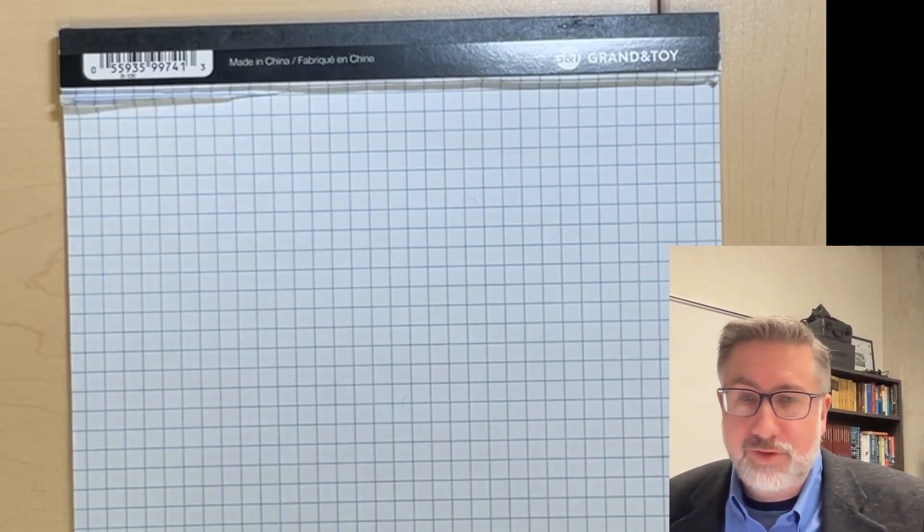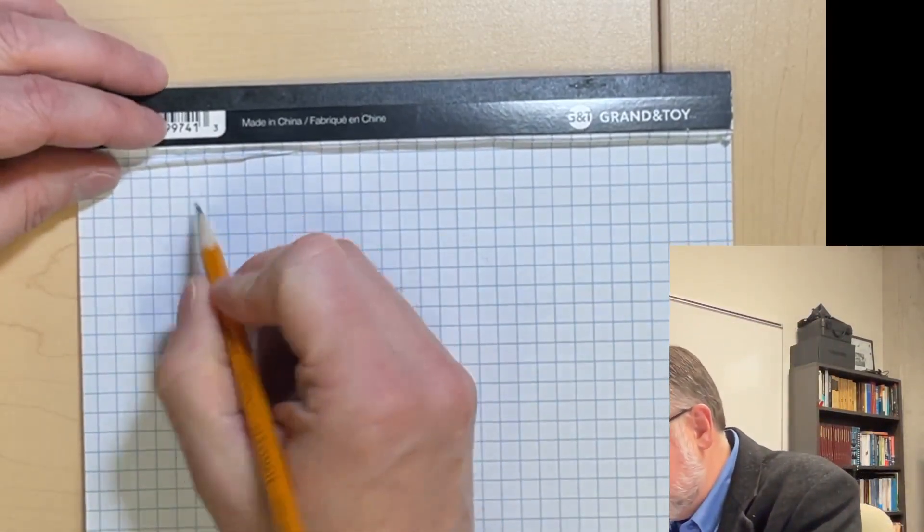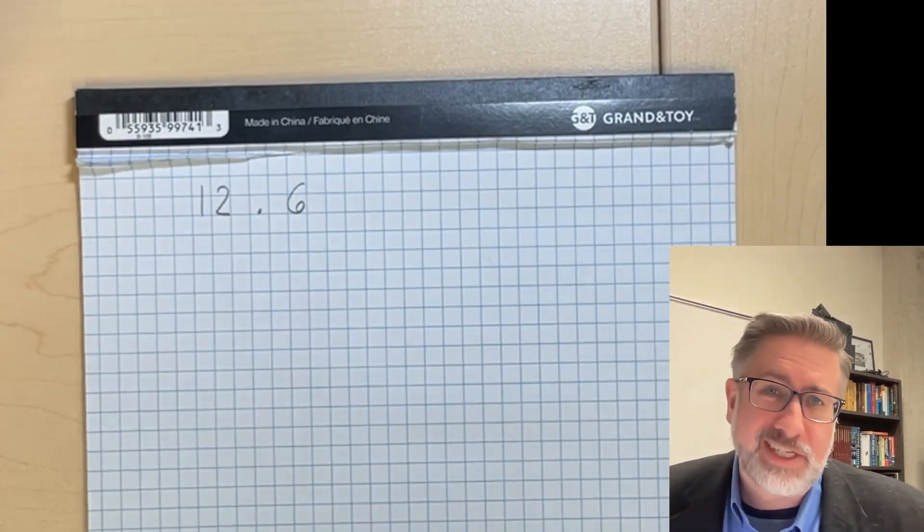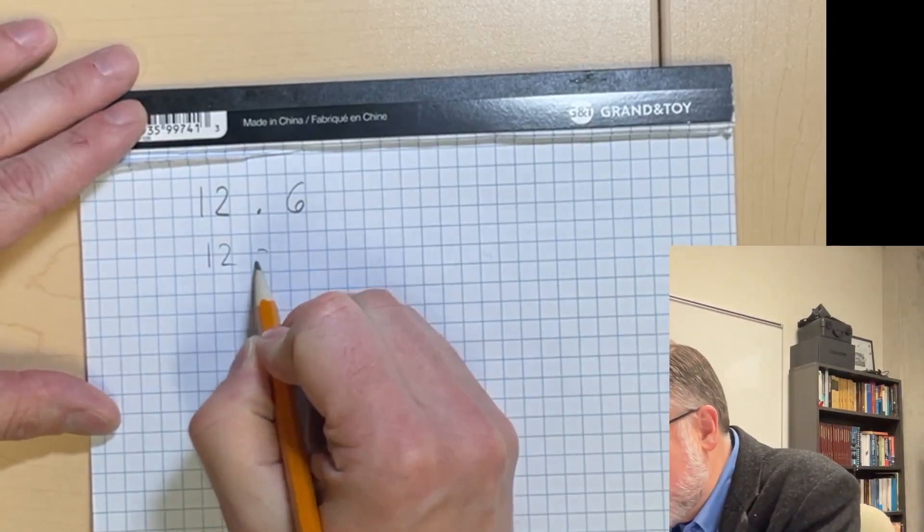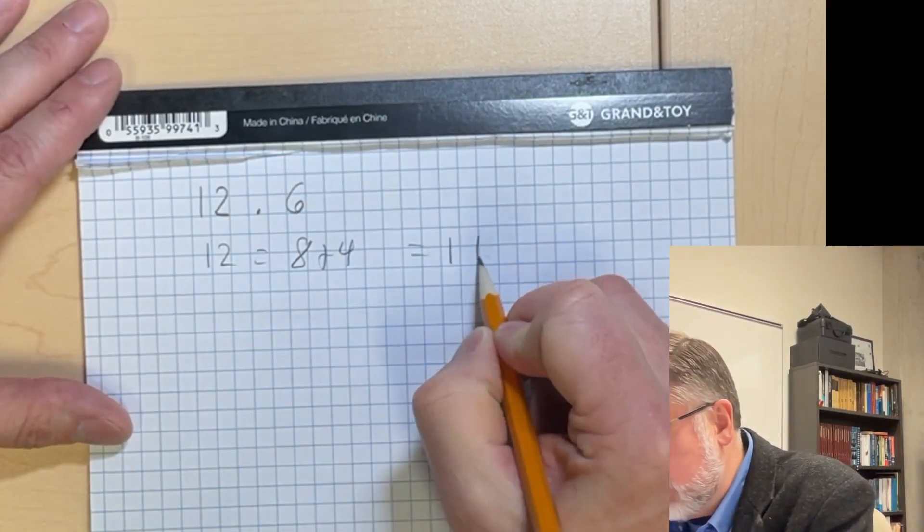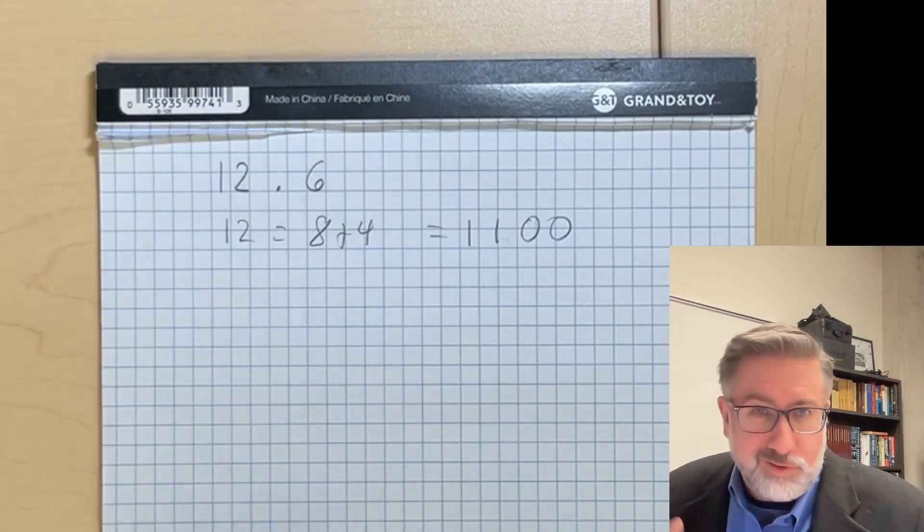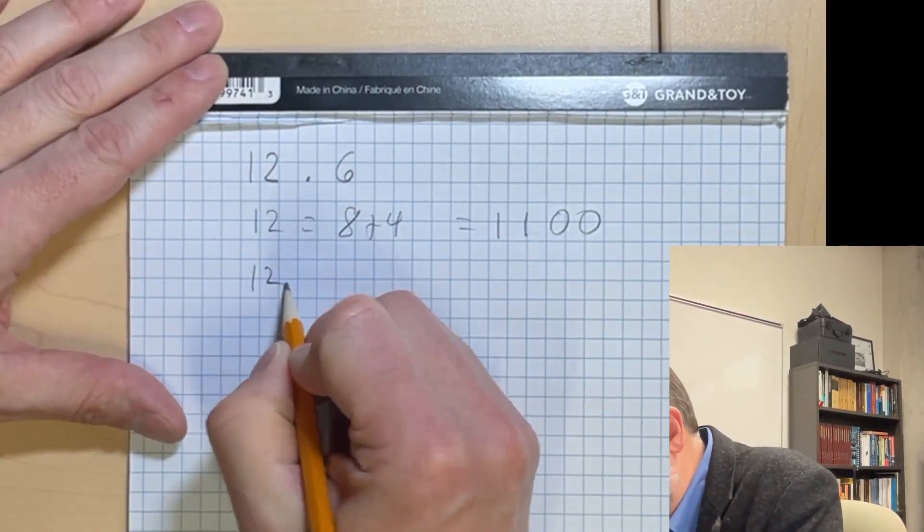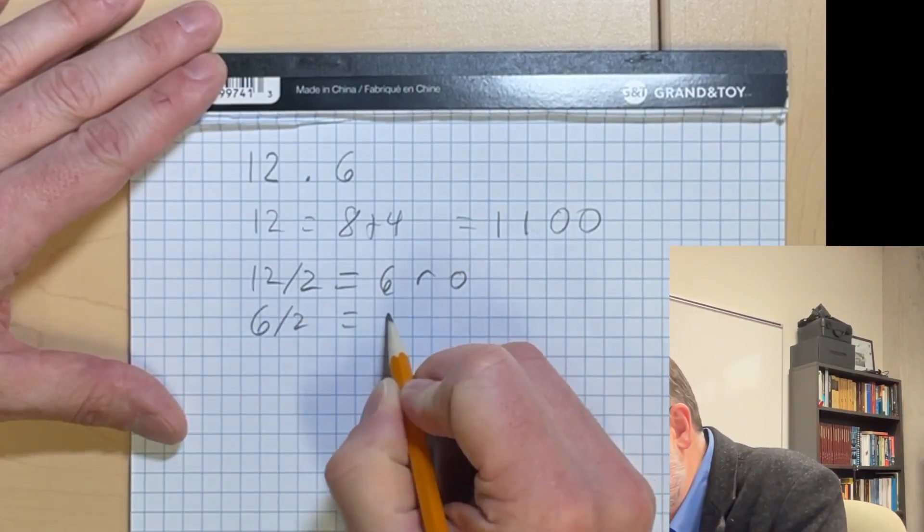Let's take some random number, let's take a number that is, well first of all say something like 12.6 as an example. What we do is we split this in half. The 12 is easy, we know that 12 is 8 plus 4, which is 1100. Now if we were going to do this using our process, we would do our repeated divisions by 2. 12 divided by 2 is 6 remainder 0, 6 divided by 2 is 3 remainder 0.